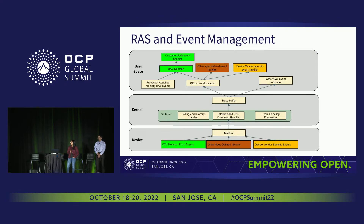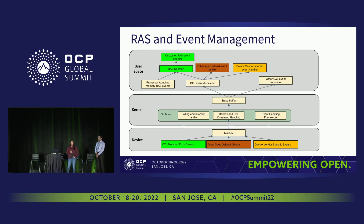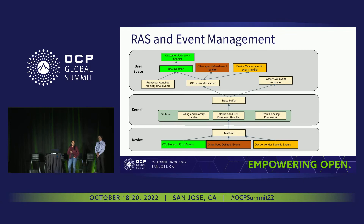We have heard from many CPU and memory vendors about the effort being put into rich RAS features. But from an infrastructure tooling standpoint, the most important part is getting visibility into those RAS features from the host side. As AMD mentioned, we are working with them to define an end-to-end user space, kernel space, and device-specific command set to provide rich RAS features and visibility into various errors and failures from the CXL device standpoint.